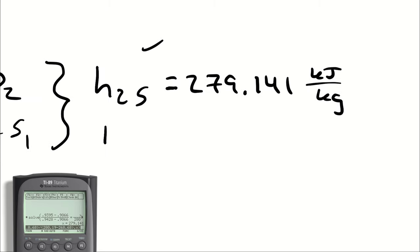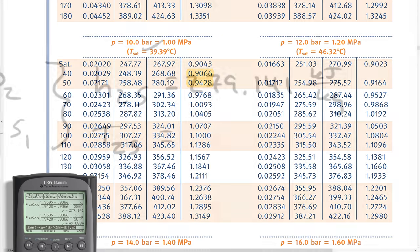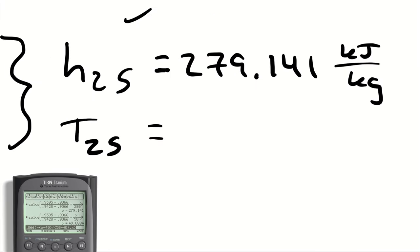You know what? While we're here, let's look up T2S. I know we don't have to, but, you know, character building. So I'm going to use that same proportion, and I'm going to say X minus the temperature at an enthalpy of 268.68, which is going to be 40 degrees Celsius, and I'm dividing by 50 minus 40 degrees Celsius, and that gives me a temperature of 49.088.